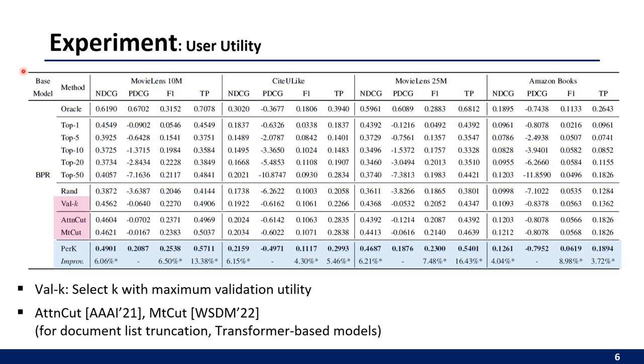We conduct experiments with four user utility measures on four real-world datasets. Our method yields higher user utility than fixed size recommendation methods or the state-of-the-art document list truncation methods.